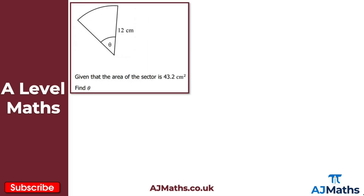For question two, we can see a sector with a radius of 12 centimetres. The angle is given as theta. We're also given that the area of the sector is 43.2 centimetres squared, and we're asked to find theta.